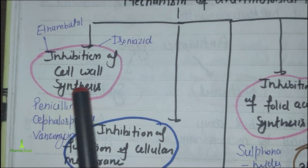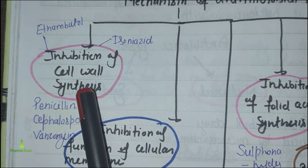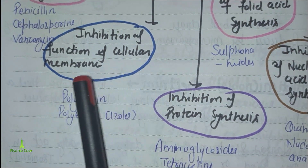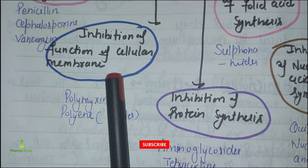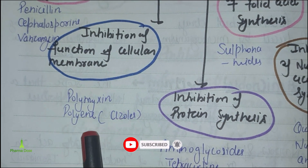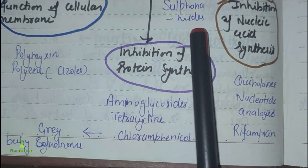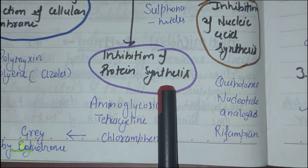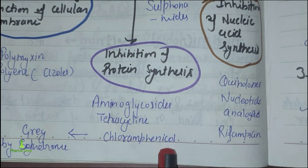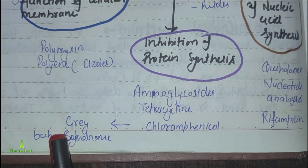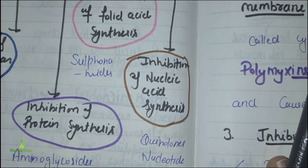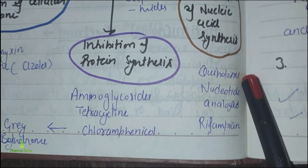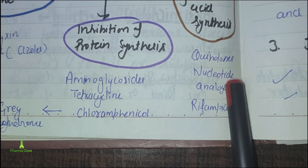In the first category — inhibition of cell wall synthesis — we have drugs like Penicillin, Cephalosporins, Vancomycin, Isoniazid, and Ethambutol. For inhibition of cellular membrane function, we have Polymyxin and Polyene such as Azole drugs. The third is inhibition of folic acid synthesis. The fourth is inhibition of protein synthesis. The fifth is inhibition of nucleic acid synthesis, which includes Quinolone drugs and Rifampicin.